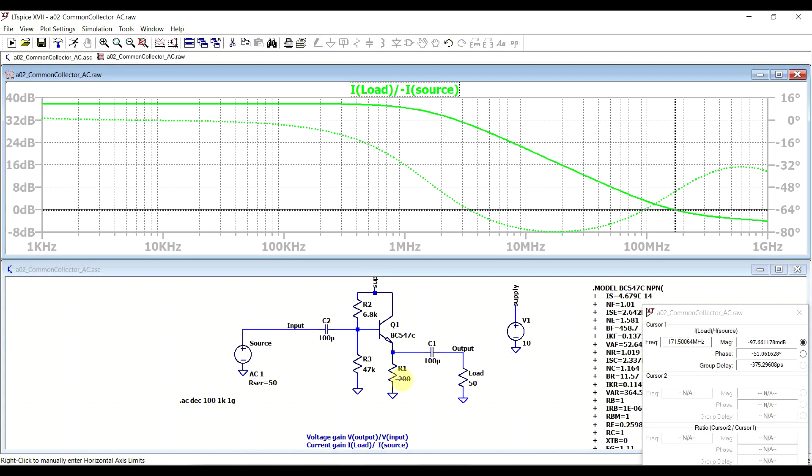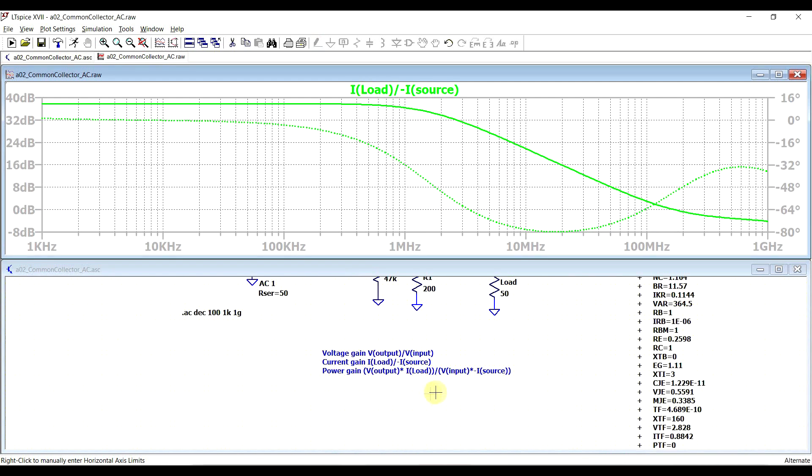So the current gain of the amplifier is more or less equal to the transistor's gain. This transition frequency is perfectly normal for this particular transistor.